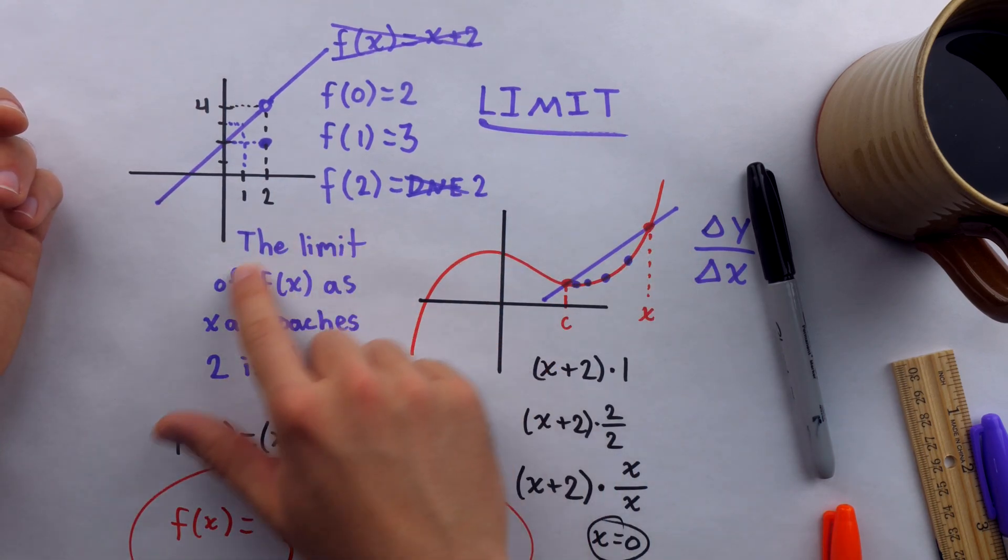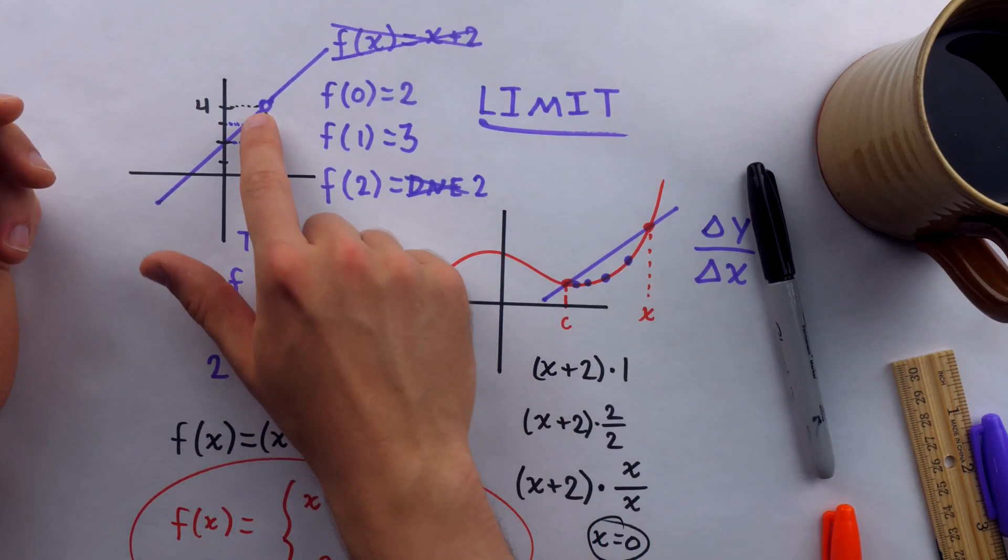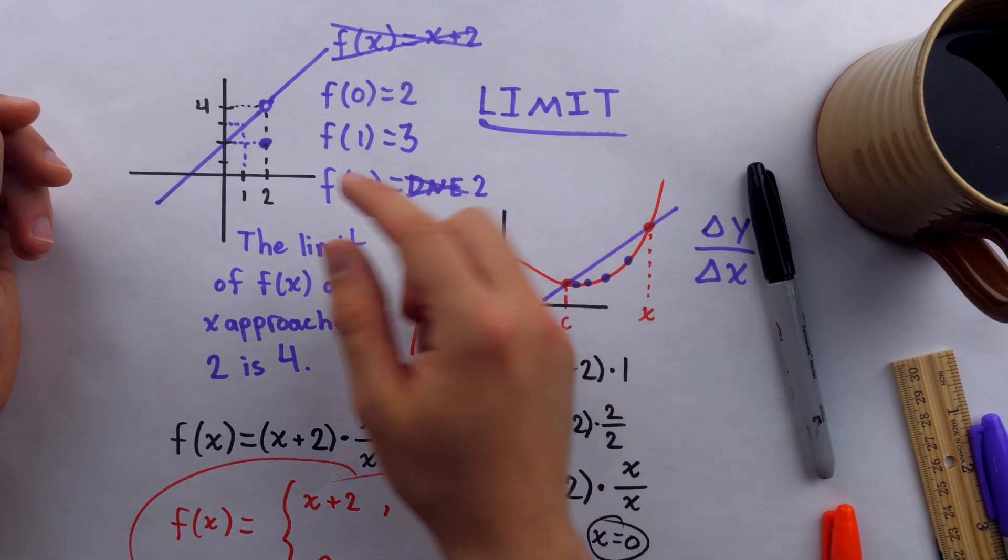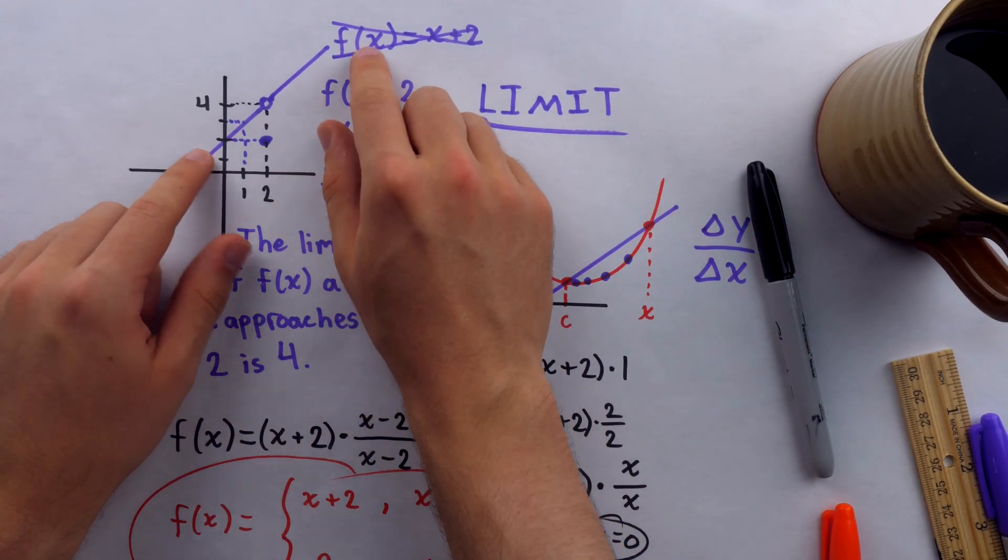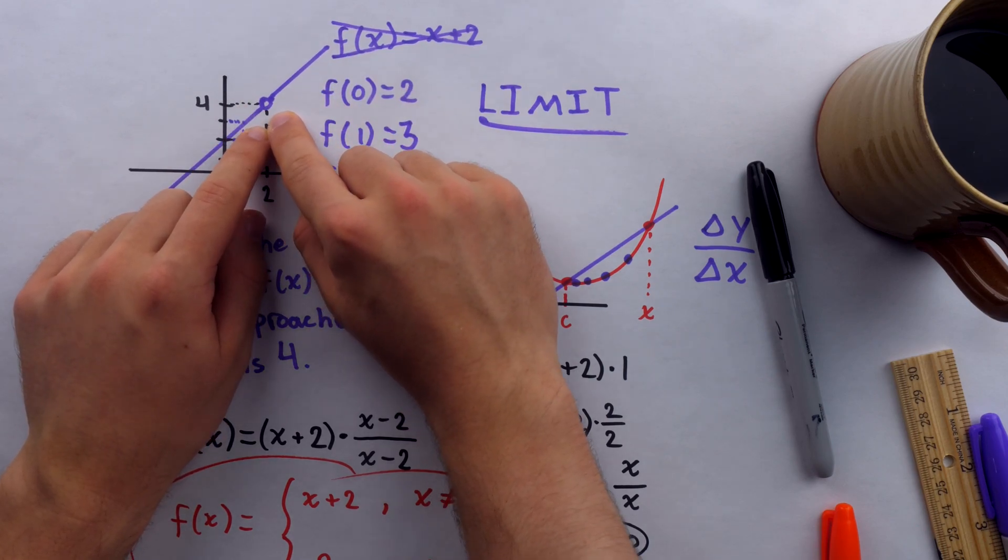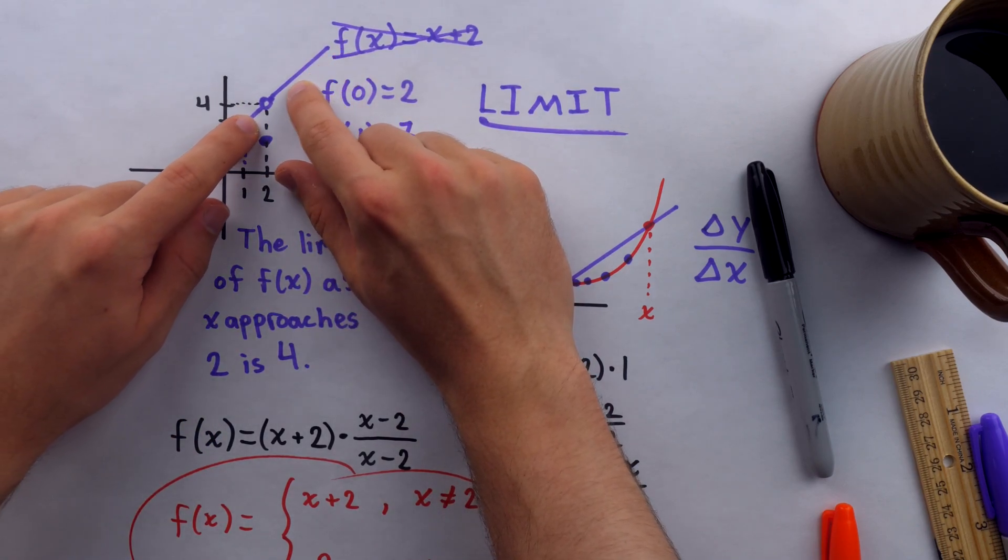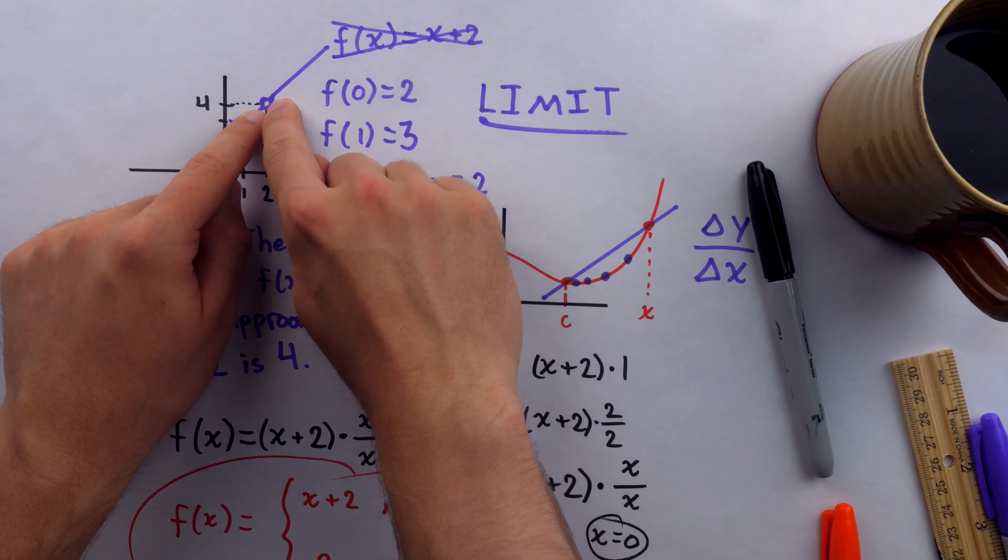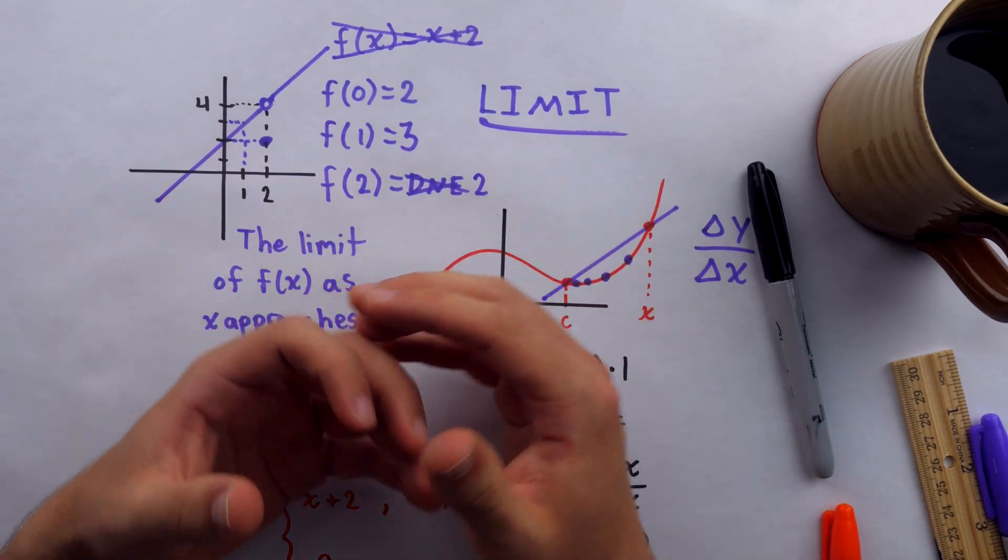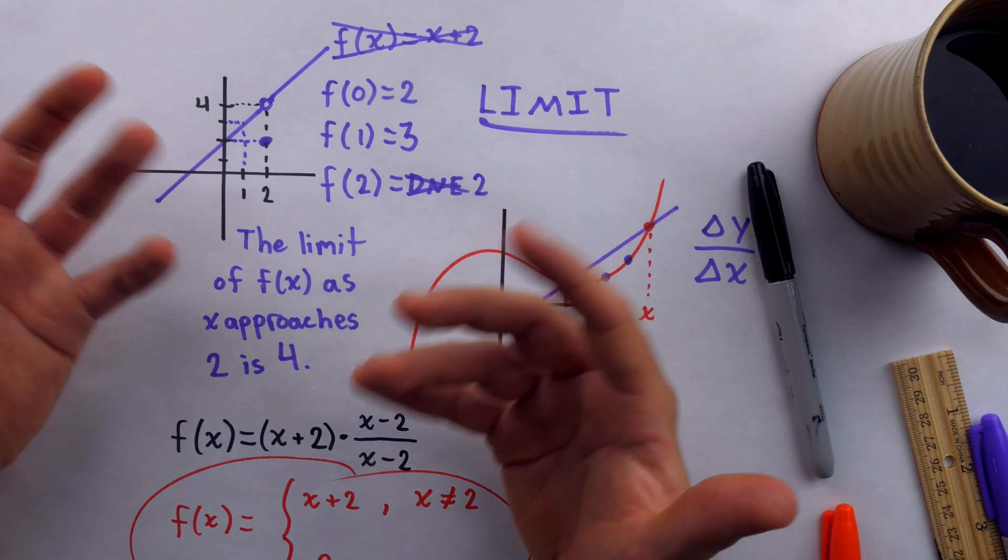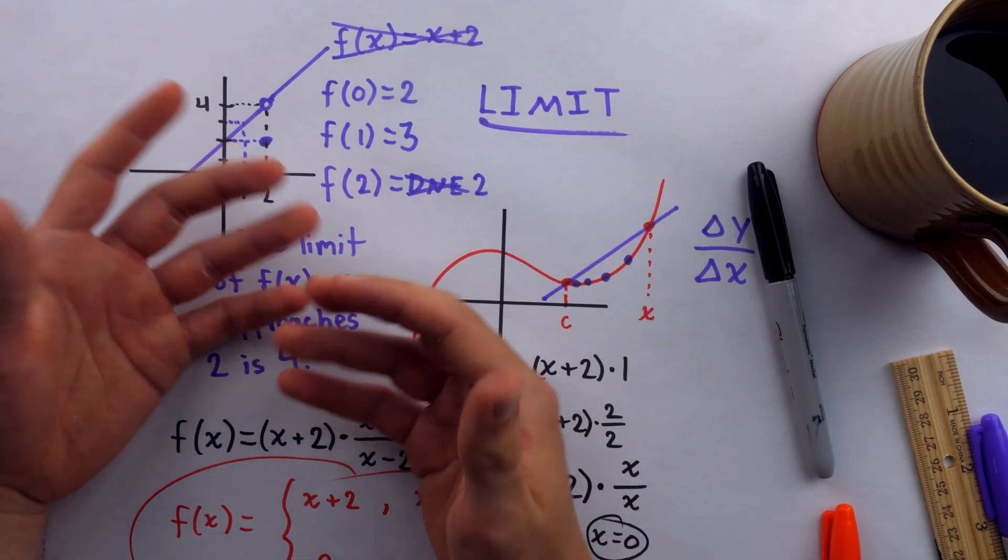The limit of this function as x approaches two is four, but the function's value at x equals two is two. And this idea of distinguishing what happens at a point from what happens as we get arbitrarily close to that point, this is the key concept that's going to allow you to thoughtfully tackle the infinities and paradoxes of calculus.